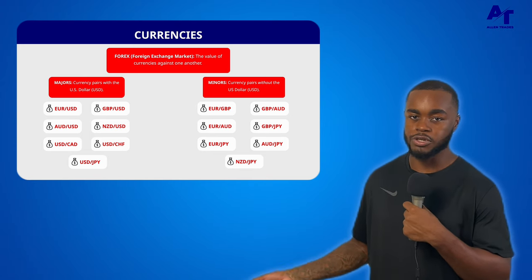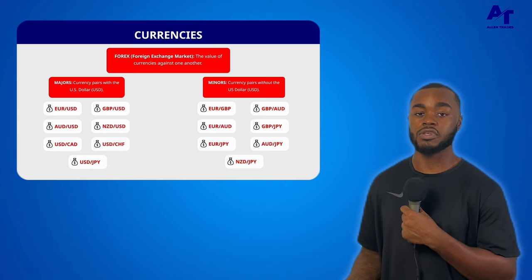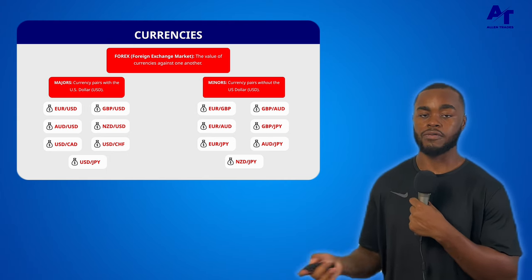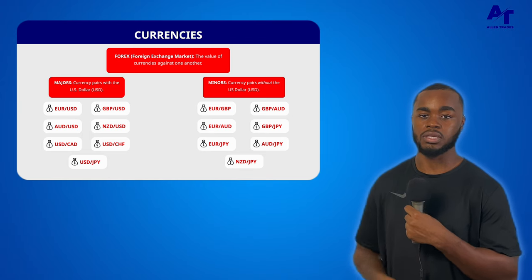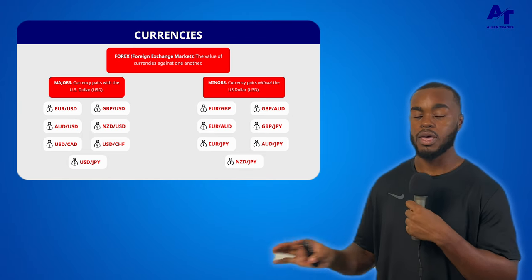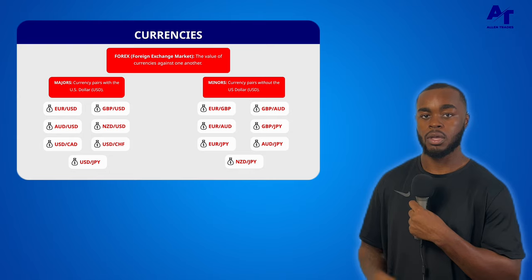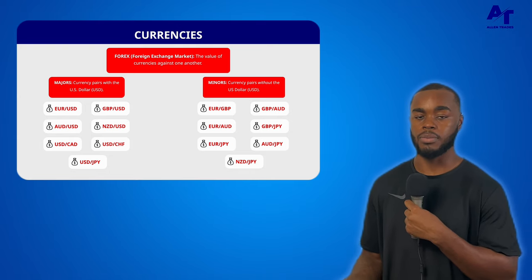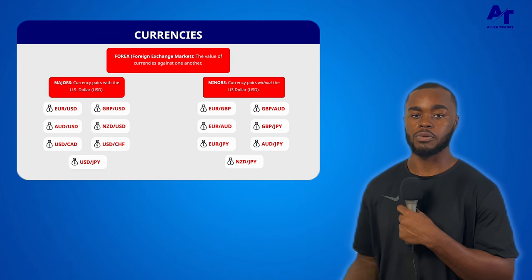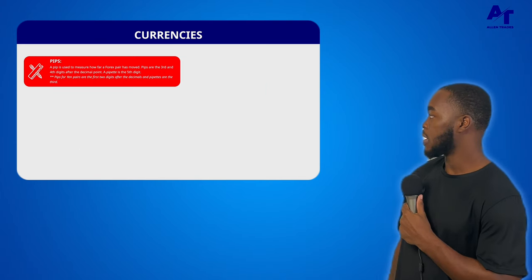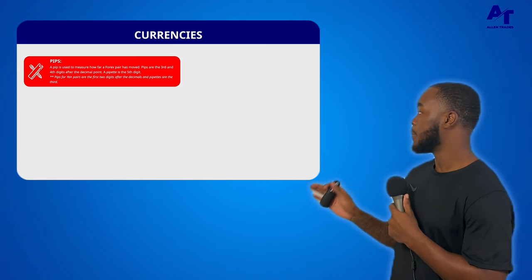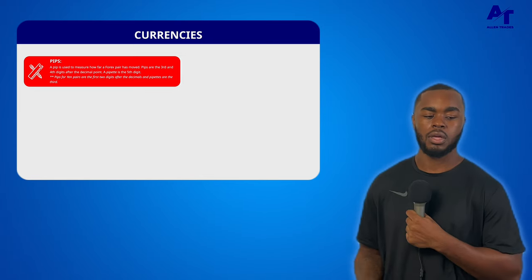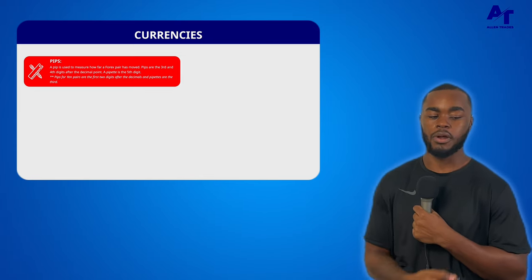We call them majors because at the time of this recording the U.S. dollar is the global reserve currency — the number one currency in the world. So as long as that stands, the majors will always be considered the U.S. dollar pairs. Moving on: how do we measure currencies? We measure them in pips — it's how we measure how far a forex pair has moved.